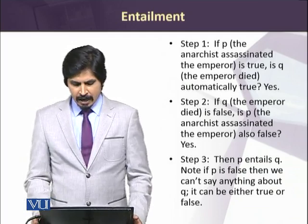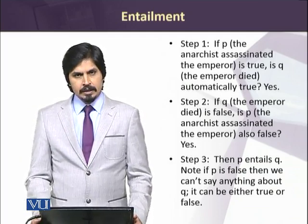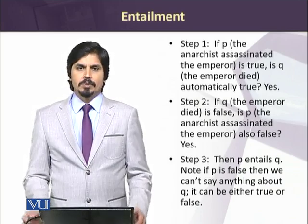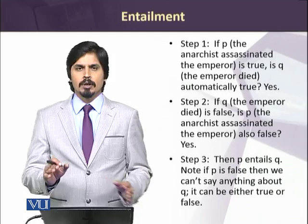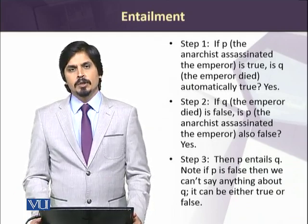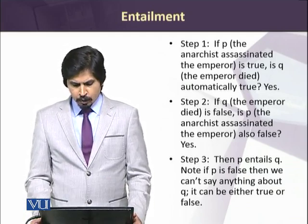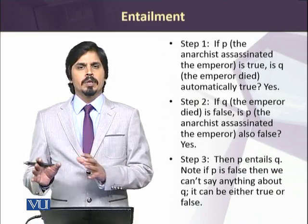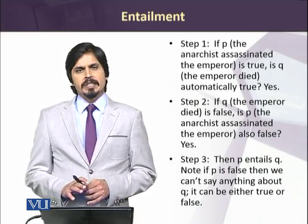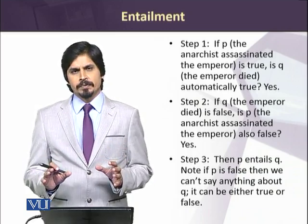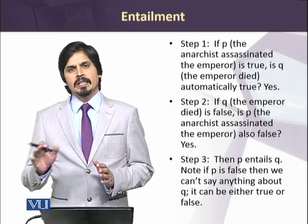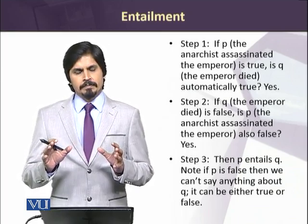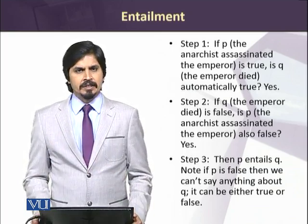Step two: if Q — 'The emperor died' — is false, is P — 'The anarchist assassinated the emperor' — also false? Yes, so check two is also confirmed. Step three: we can conclude that P entails Q. Note: if P is false, we cannot say anything about Q — it can be either true or false. The question of entailment usually arises when P is true, and most scholars agree that if P is false, the question of entailment doesn't arise in such situations.